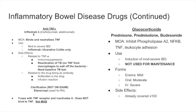The next group is the anti-TNF agents. Examples are infliximab — the important one — along with certolizumab and adalimumab. These are monoclonal antibodies that bind and neutralize TNF, which is an important factor in IBD pathology. They are used for moderate to severe IBD. Infliximab is specifically indicated for ulcerative colitis only.